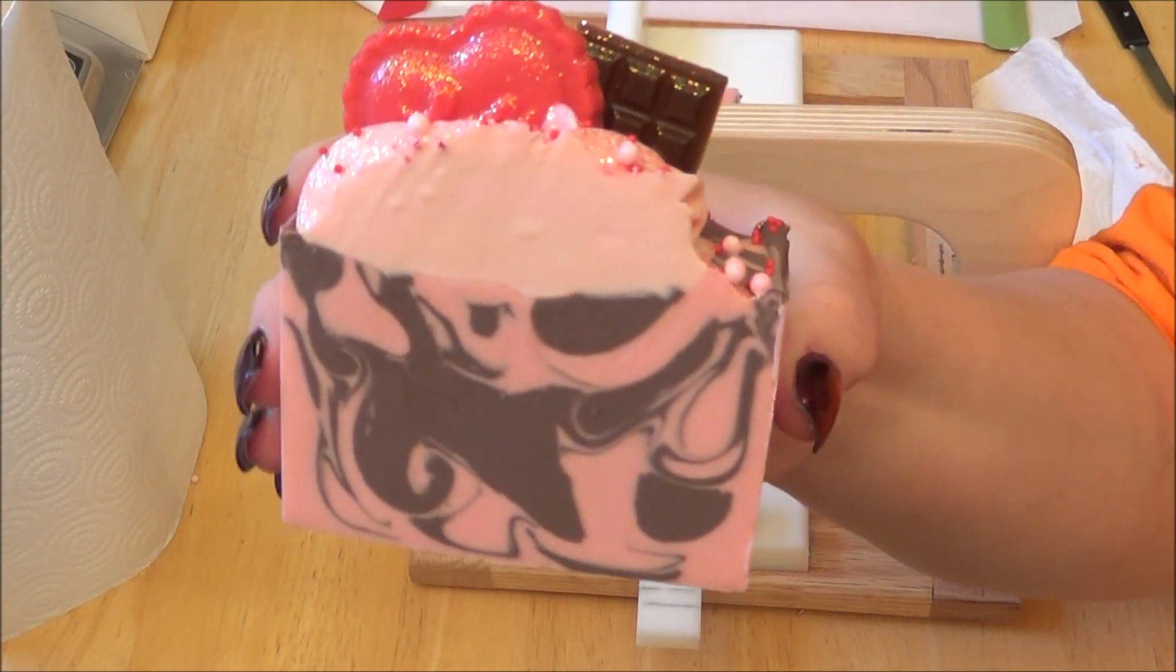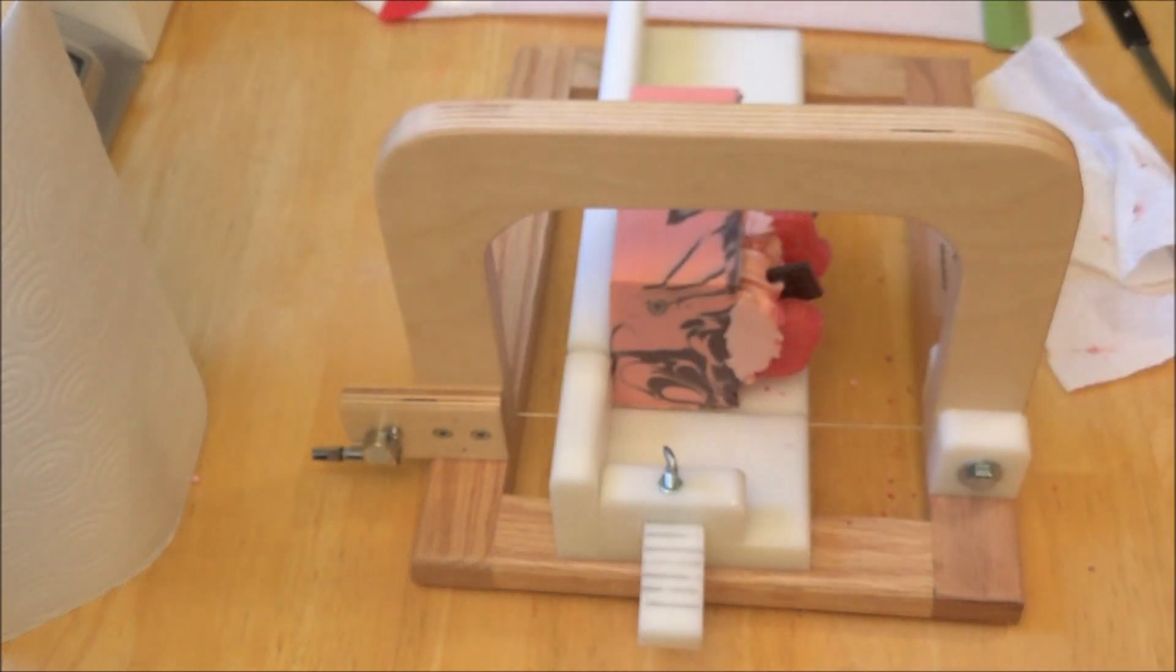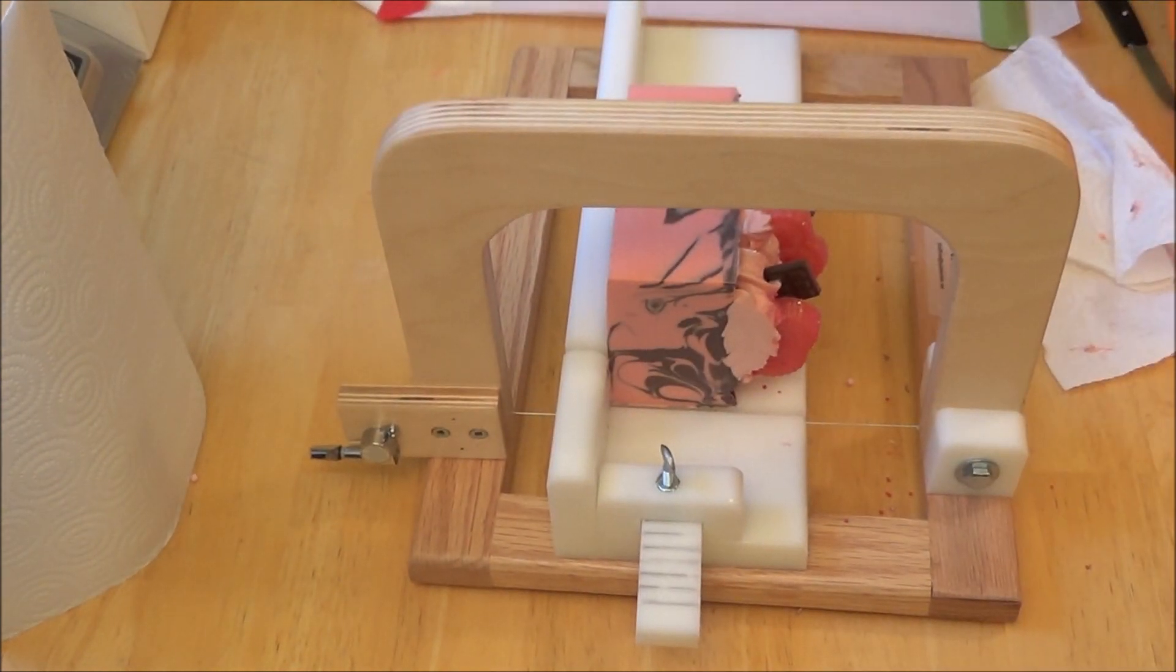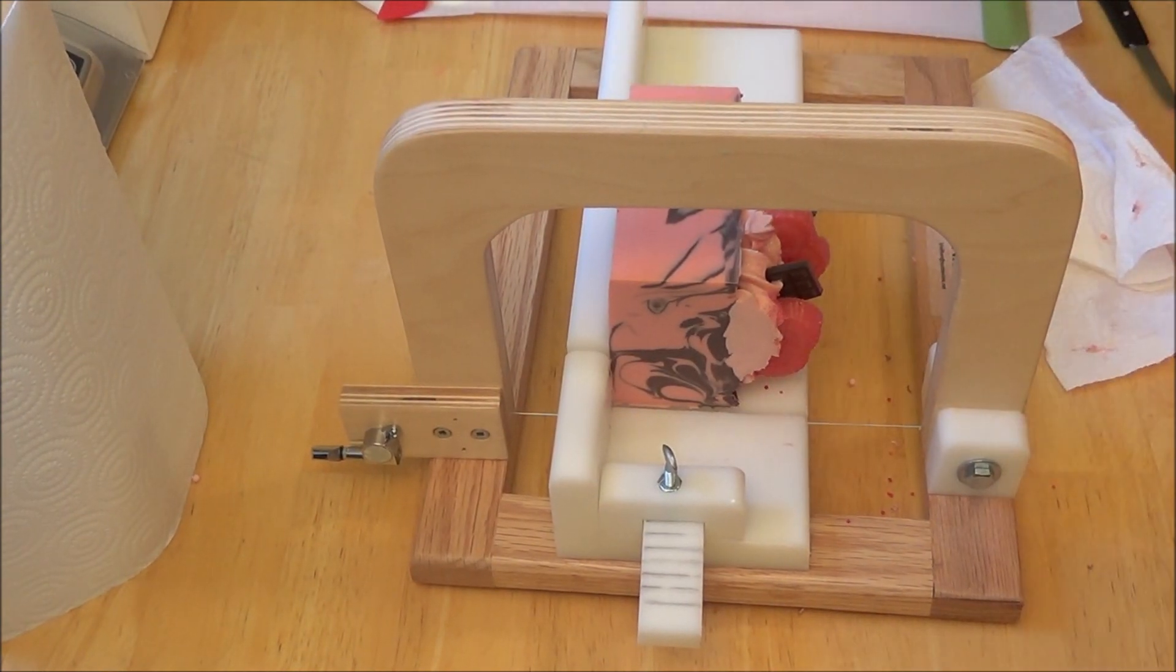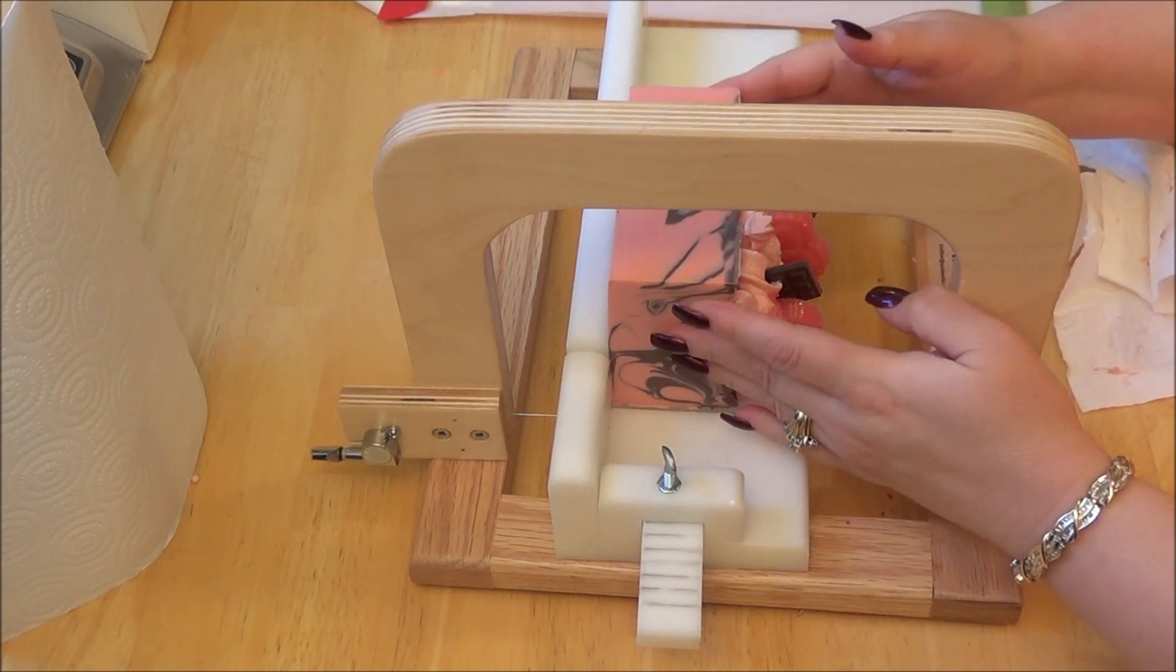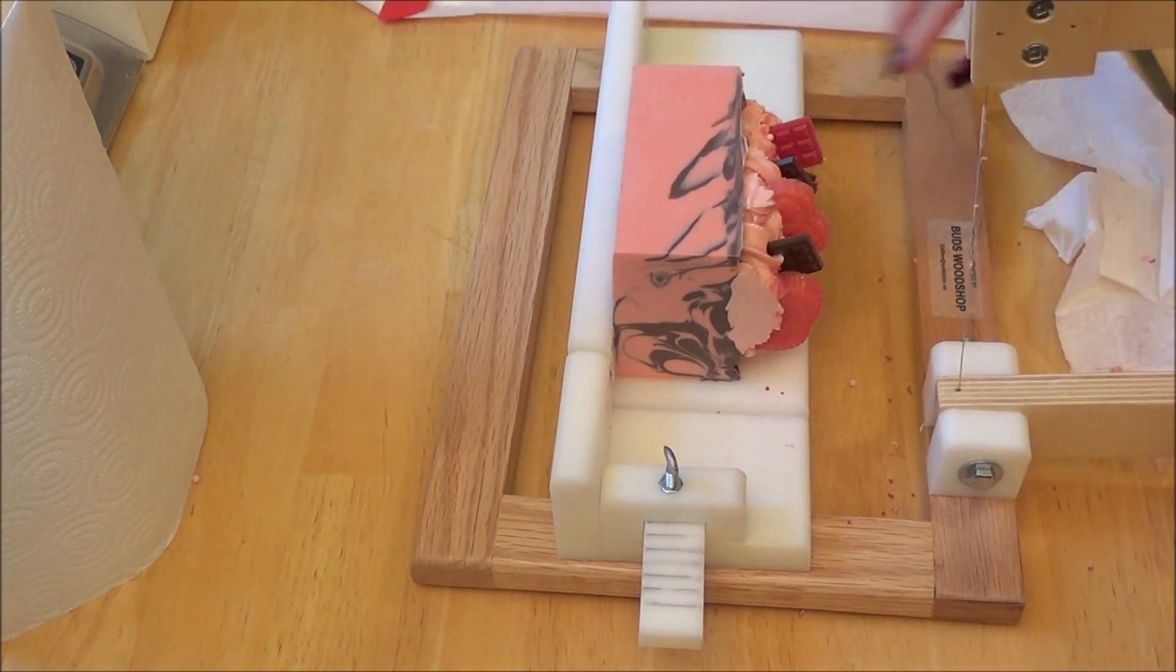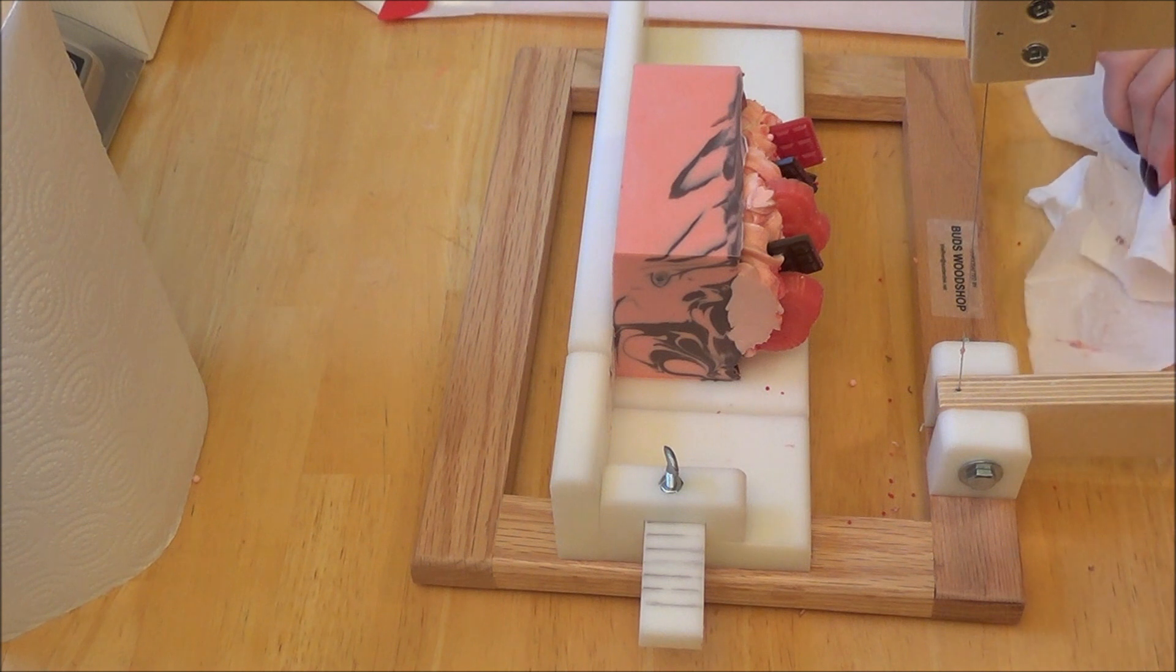Isn't it cute? We did the little heart and chocolate bar. I like the colors. This cappuccino mica looks really nice if you're looking for kind of a soft brown. I didn't do it all that dark.